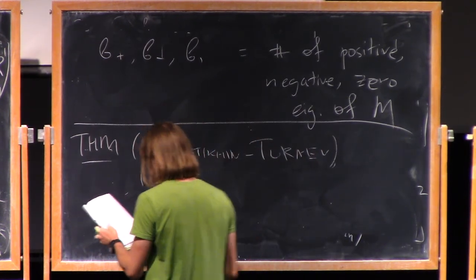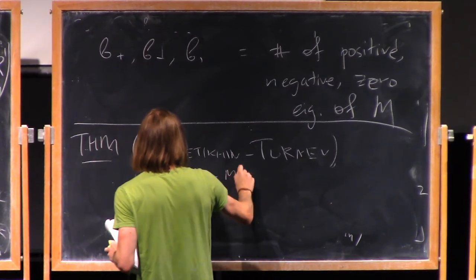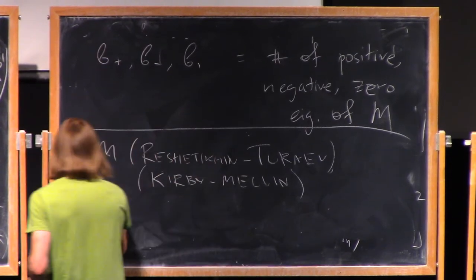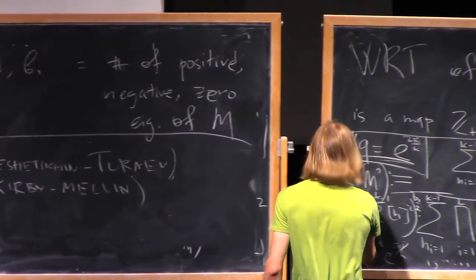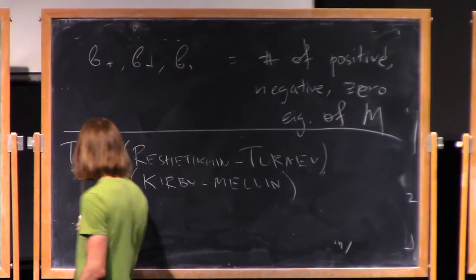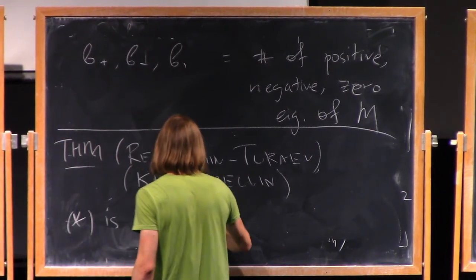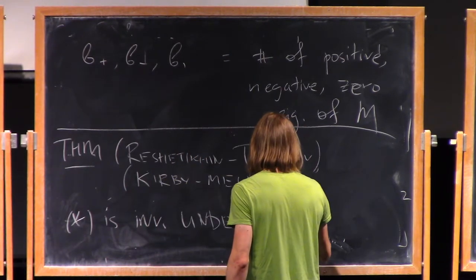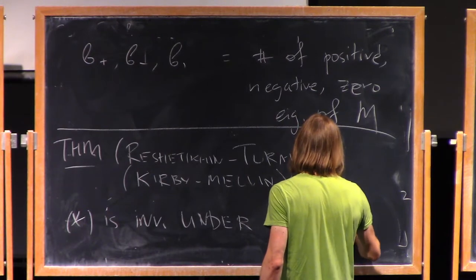And the theorem, which is by Reshetikhin and Turaev, and it's also worth mentioning, kind of, a bit of alternative approach by Kirby and Melvin, is that this formula, star, so the invariant is well defined, so star is invariant under the Kirby moves.